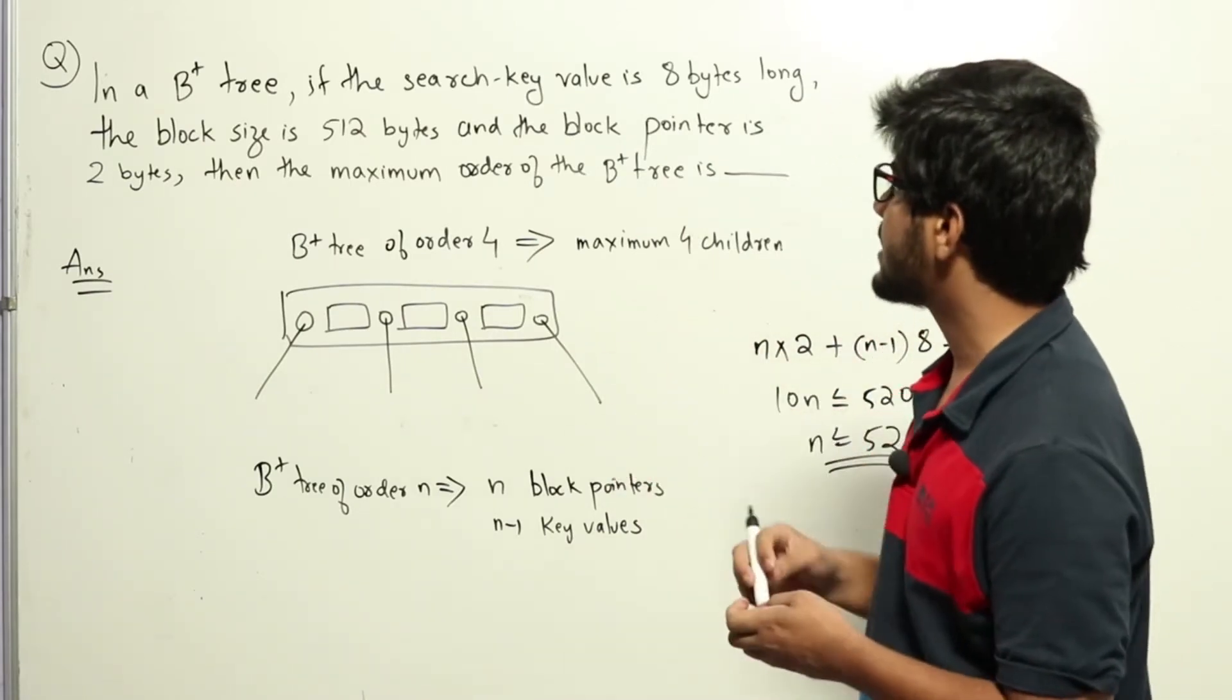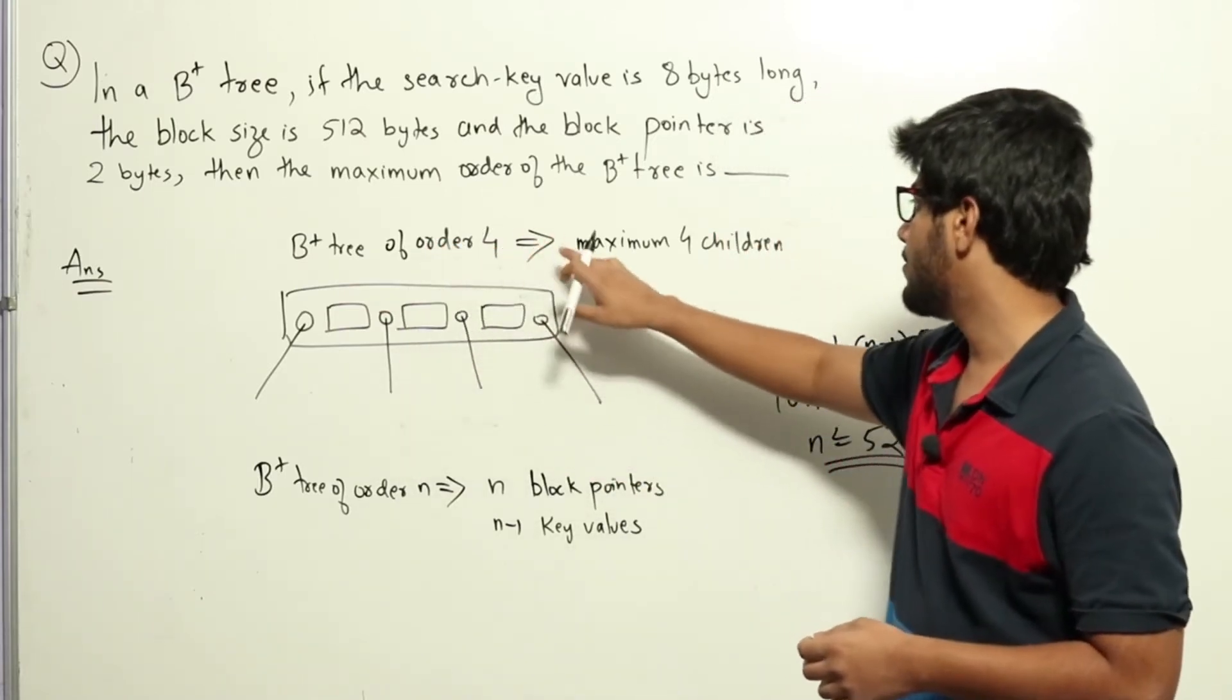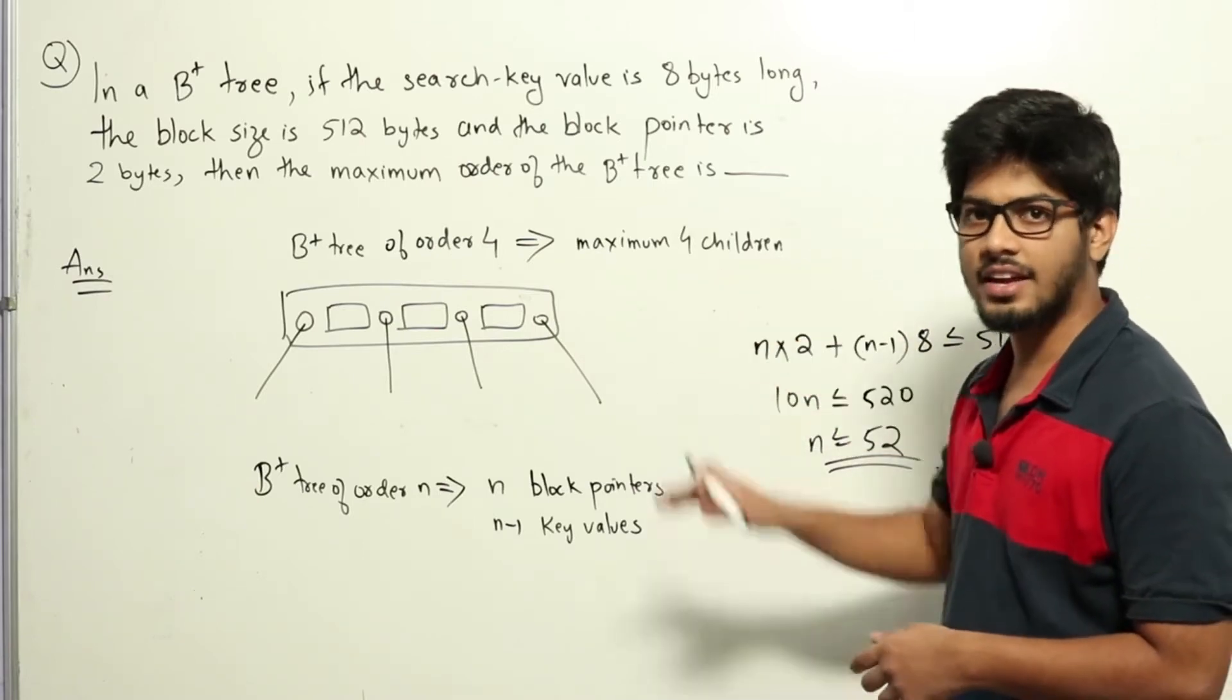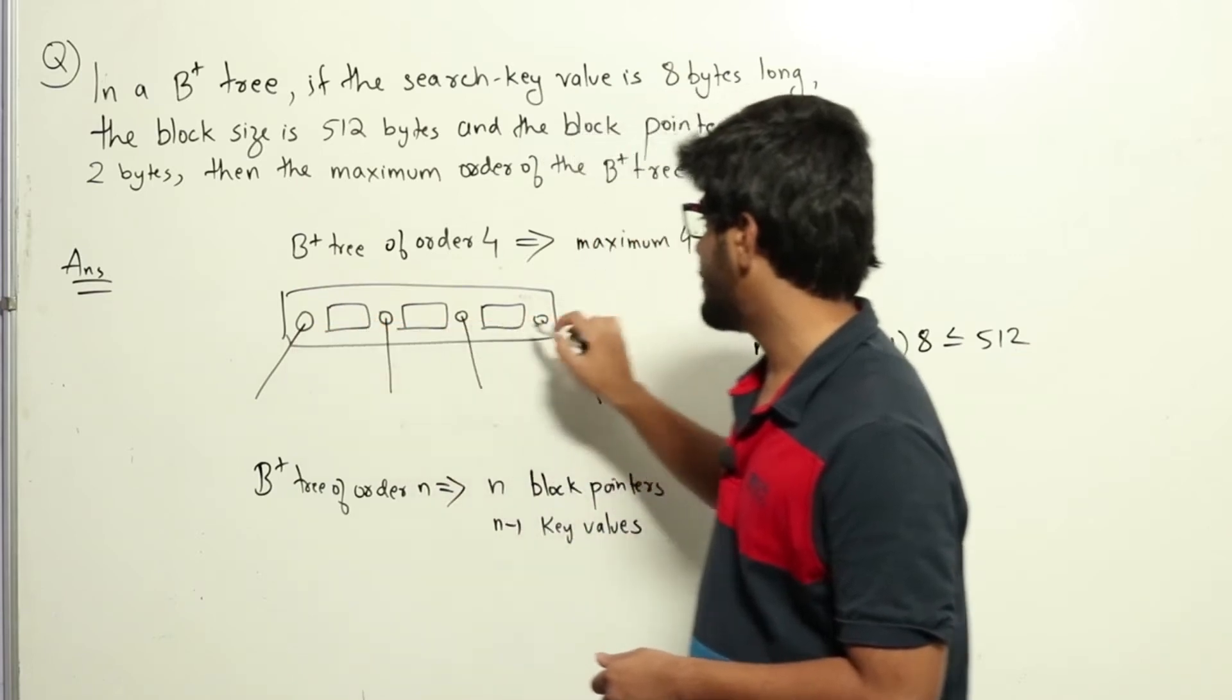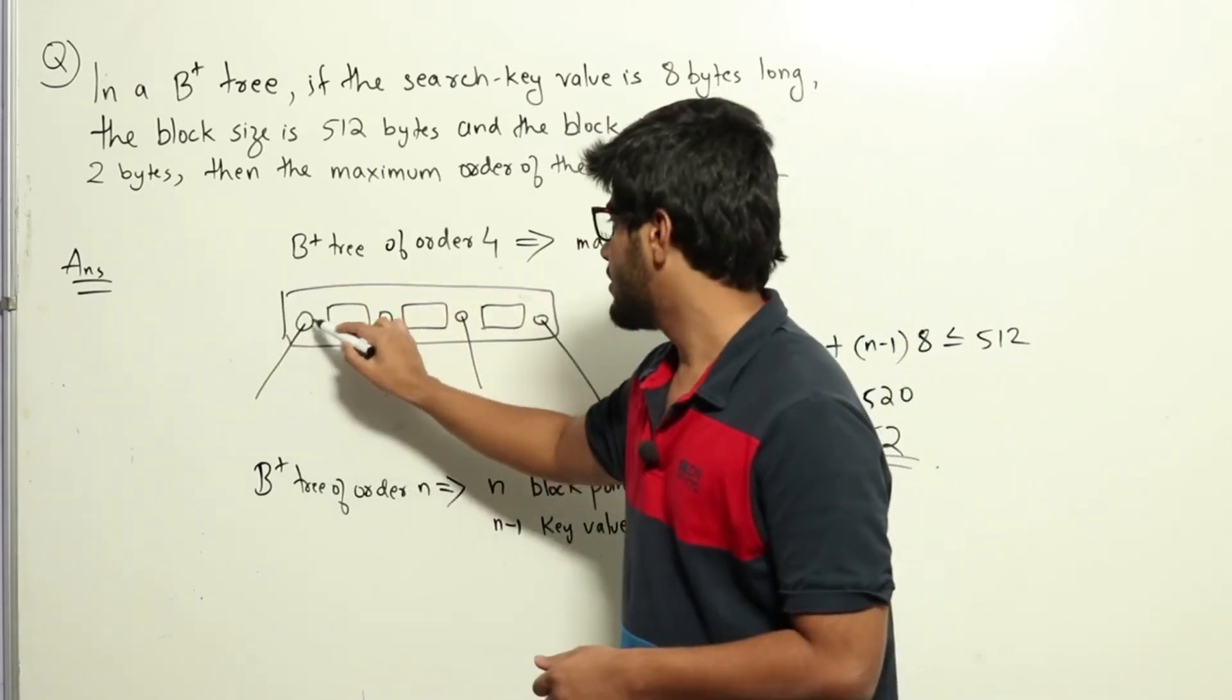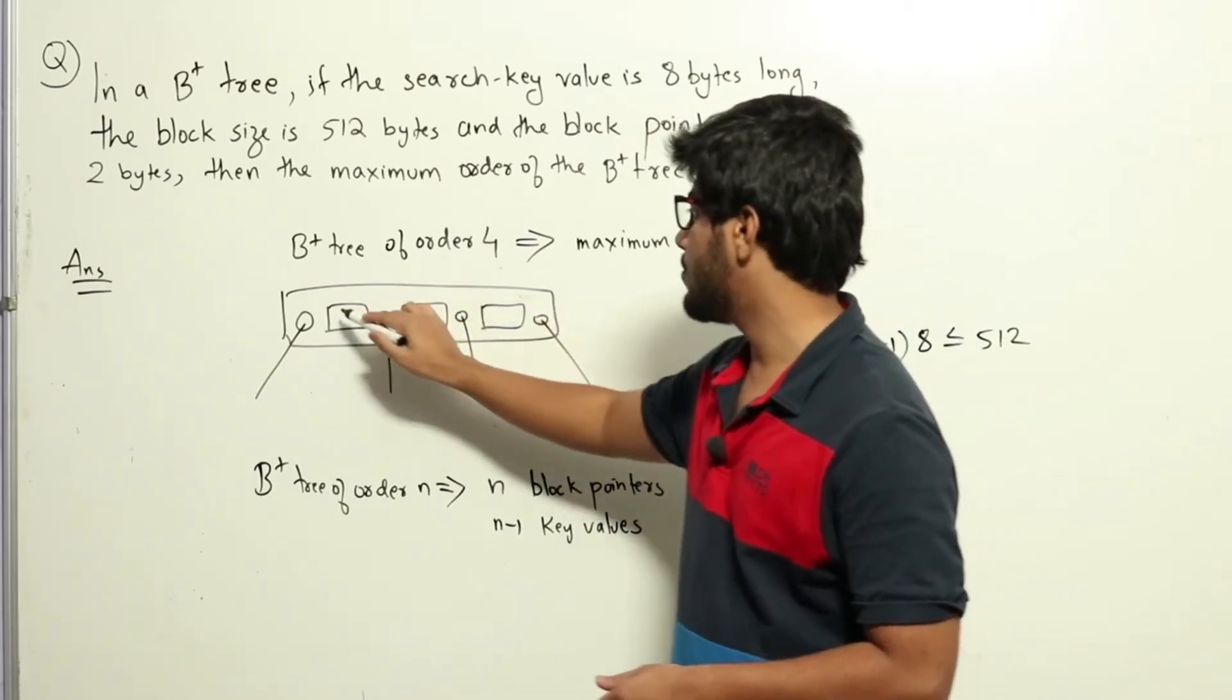Consider a sample B+ tree of order 4. A B+ tree of order 4 means it has a maximum of four children. The internal node of such a B+ tree will look like this: there will be four children, meaning four block pointers, and in between there will be key values.